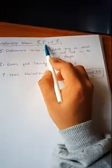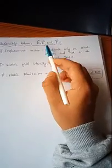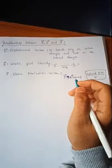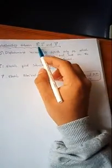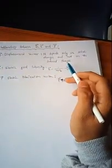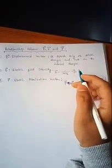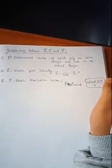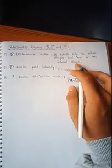In this video we shall learn about the relationship between displacement vector D, electric field vector E (that is electric field intensity), and electric polarization vector P. Before starting, let's briefly look at the definitions of D, E, and P. D is the displacement vector, and it is defined as depending only on actual charges and not on the induced charges.